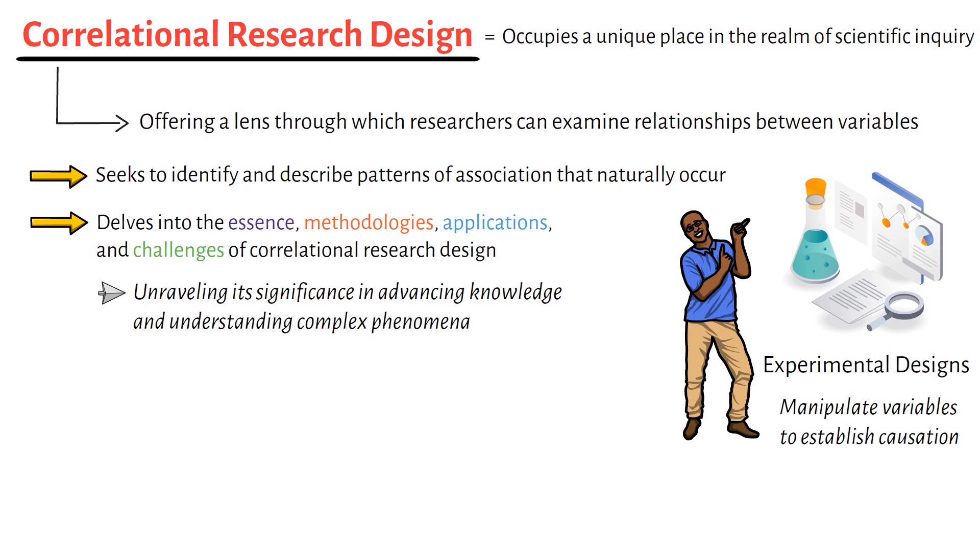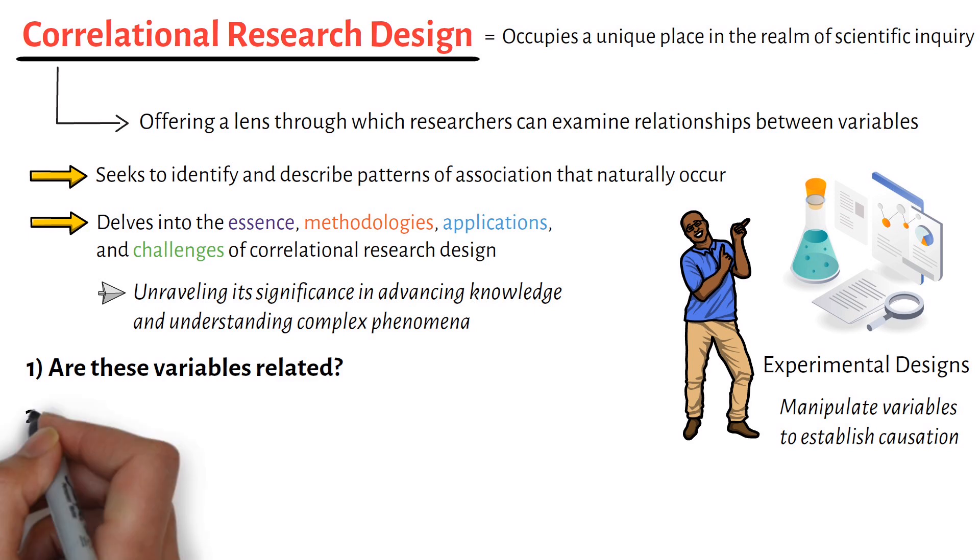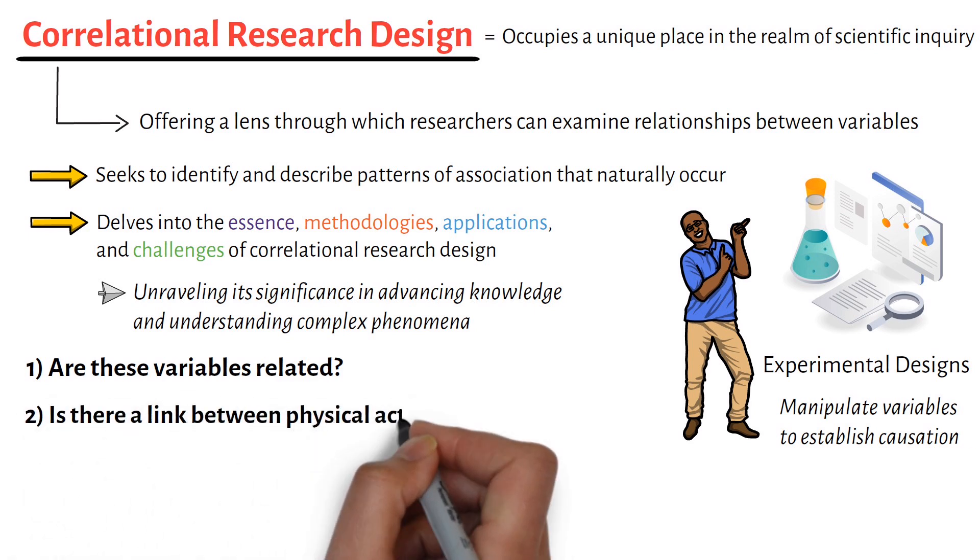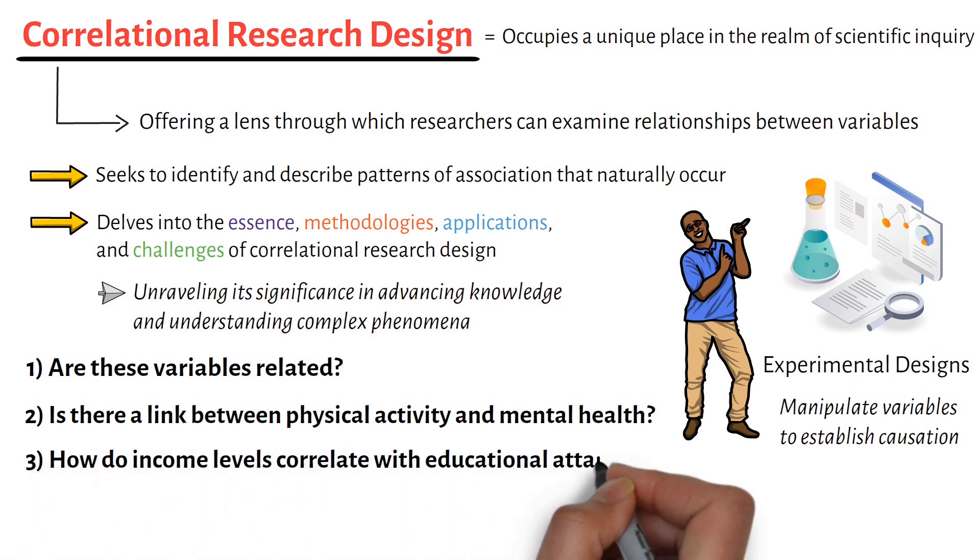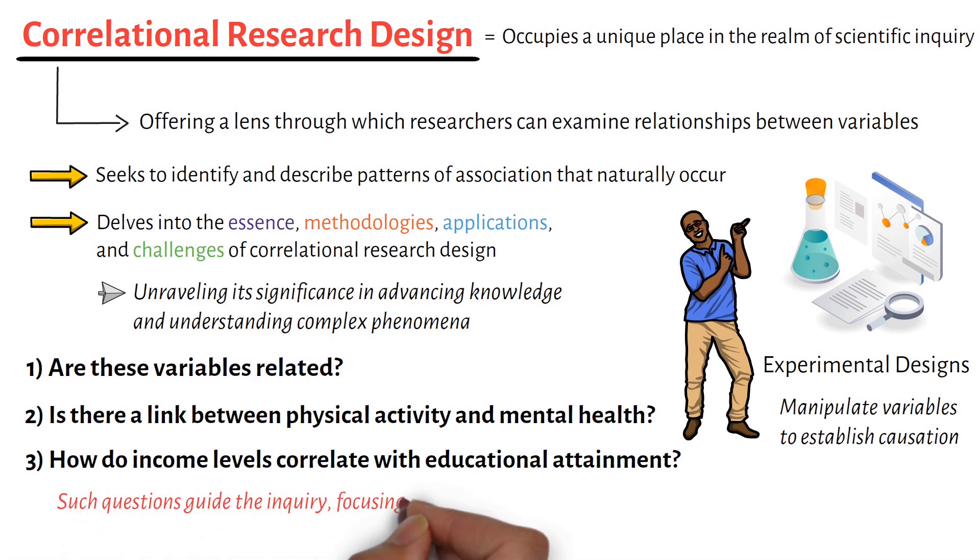The story of correlational research begins with a simple yet profound question: are these variables related? Researchers might ask, for instance, is there a link between physical activity and mental health, or how do income levels correlate with educational attainment? Such questions guide the inquiry, focusing on the nature and strength of relationships without altering the variables involved.